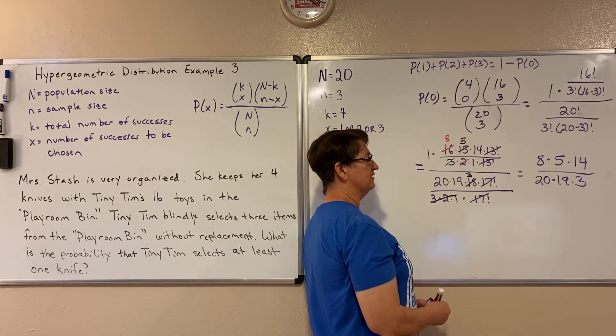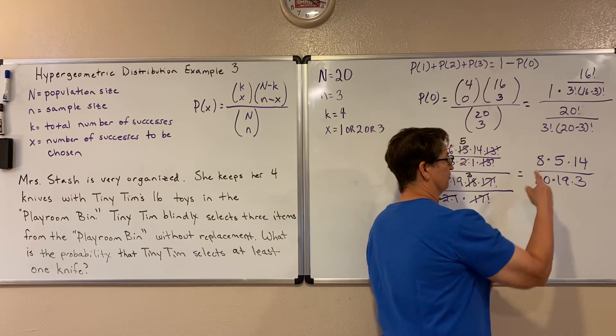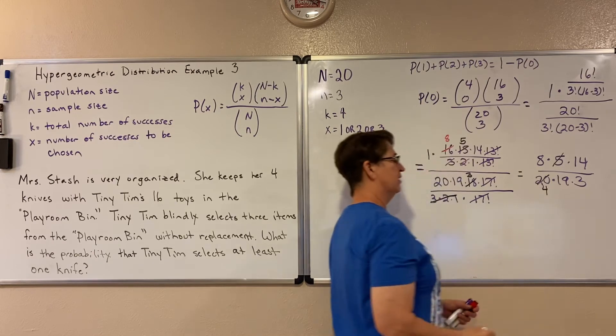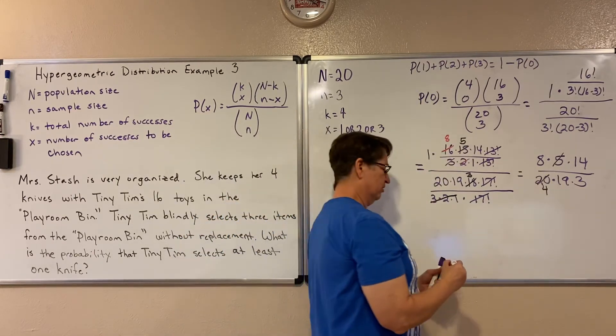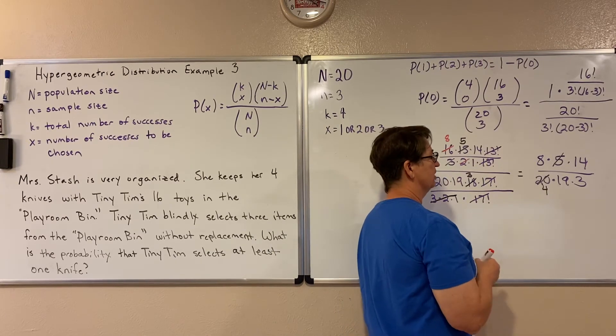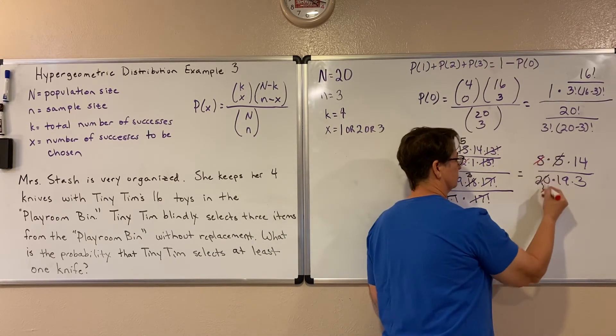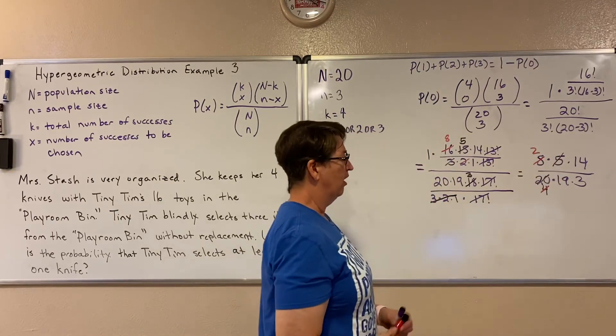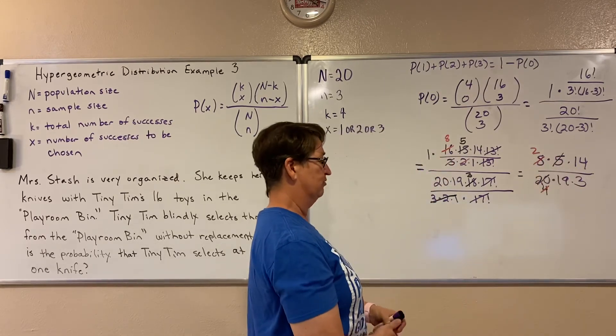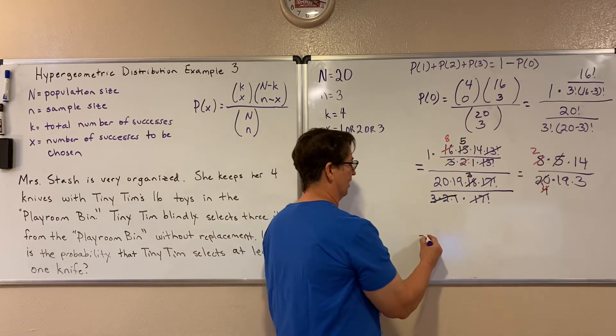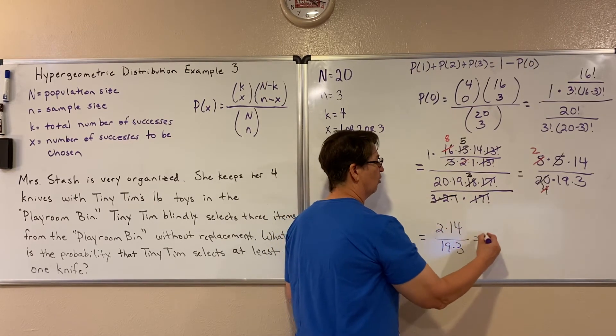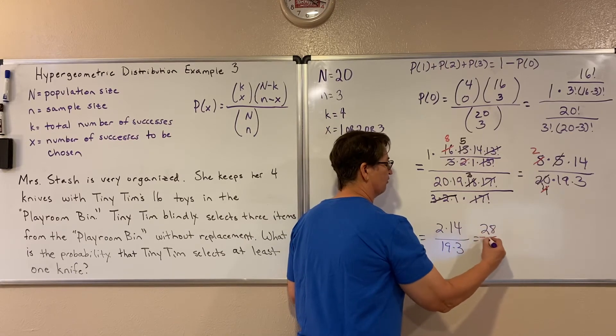So if I can, I'm going to look for anything that divides. So notice this has a factor of five and this has a factor of five. Five goes into 24 times. And this four can go into that eight on top. So eight divided by four is just two. Now on bottom, I have 19 and three. They don't have any factors in common with two times 14. So now I'm just left with two times 14 over 19 times three or 28 over 57.